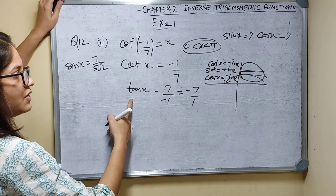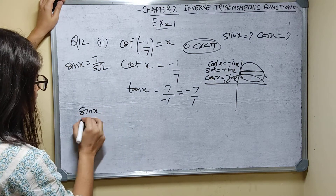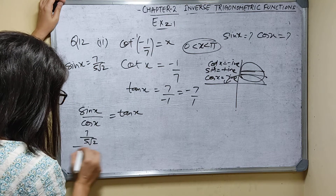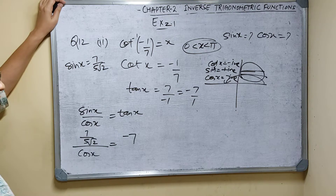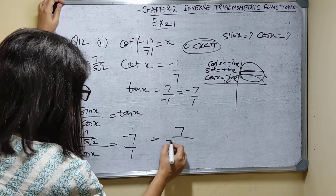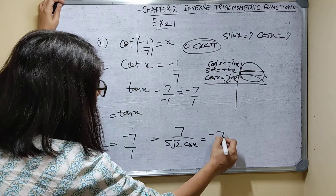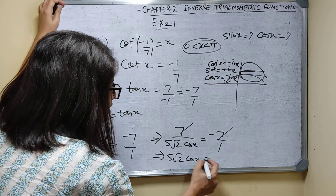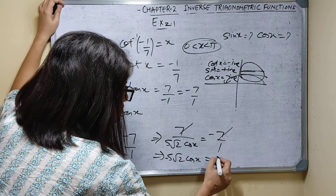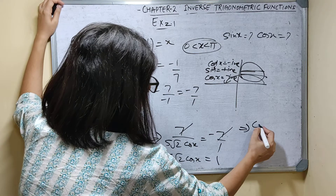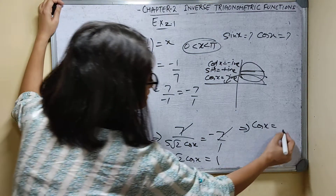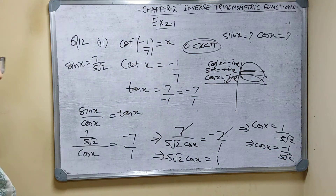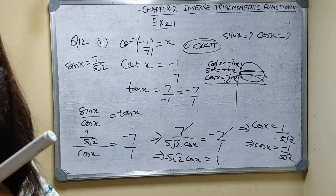Since sin x upon cos x equals tan x, we have: (7 upon 5 root 2) upon cos x equals minus 7 upon 1. So 7 upon (5 root 2 times cos x) equals minus 7. The 7s cancel, giving 5 root 2 times cos x equals minus 1, so cos x equals minus 1 upon 5 root 2.